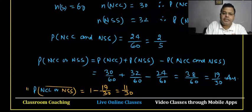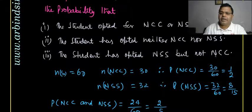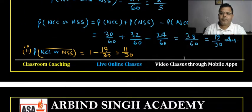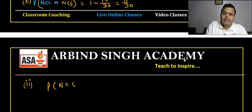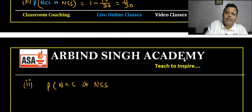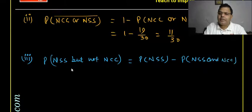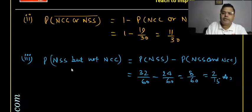The third part: find the probability a student opted for NSS but not NCC. This equals P(NSS) − P(NCC ∩ NSS) = 32/60 − 24/60 = 8/60 = 2/15.